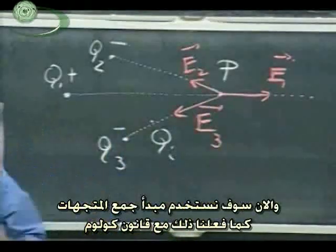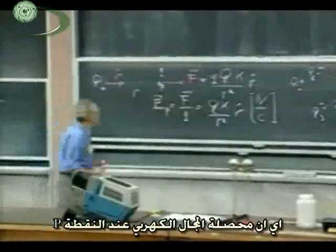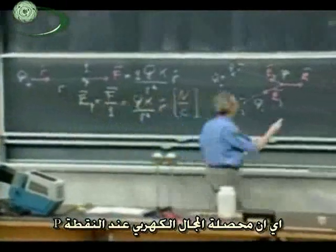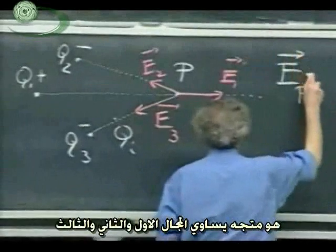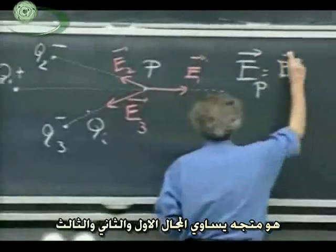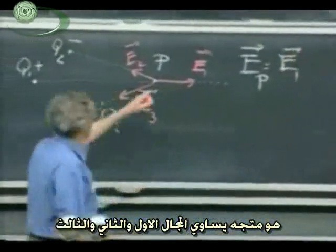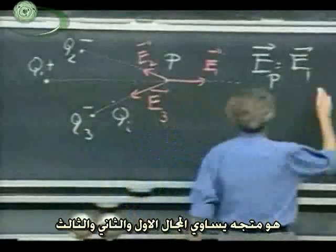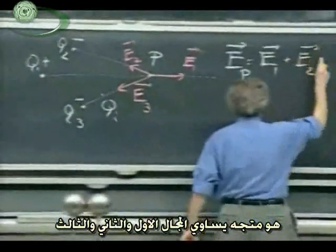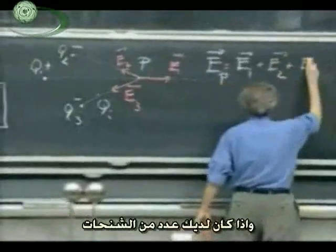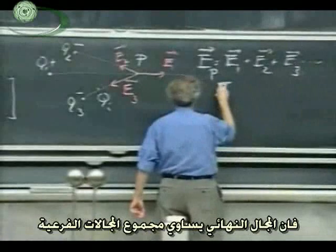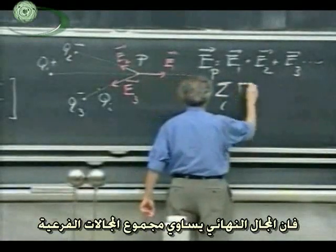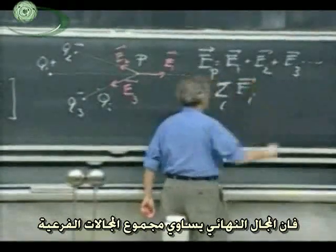And now we use the superposition principle, as we did last time with Coulomb's law, that the net electric field at point P is a vector, is E1 influence of charge Q1 plus the vector E2 plus E3 and so on. And if you have I charges, it is the sum over all I charges of the individual E vectors.